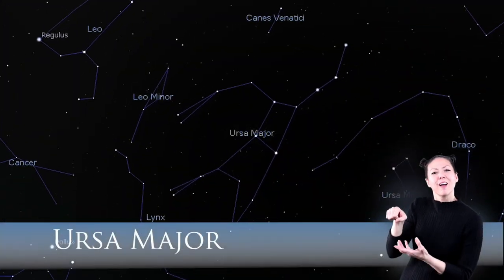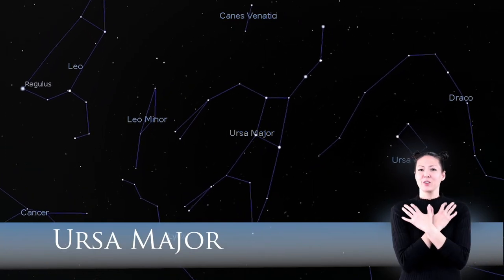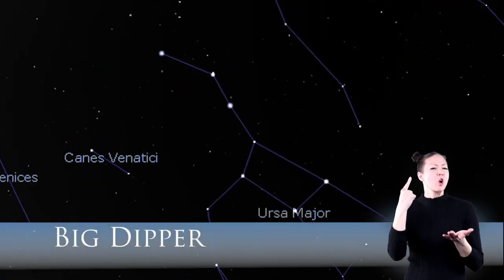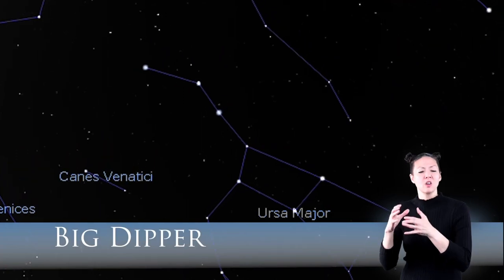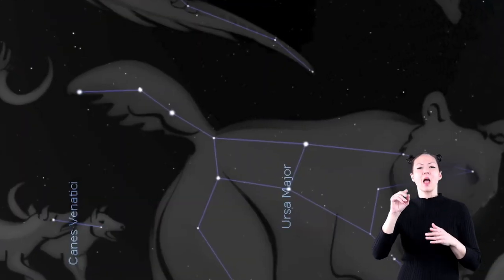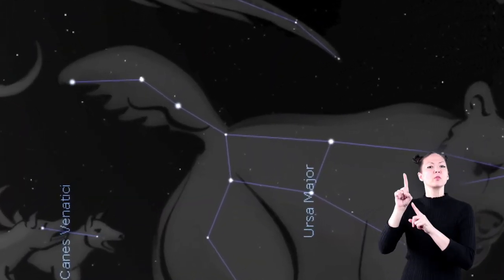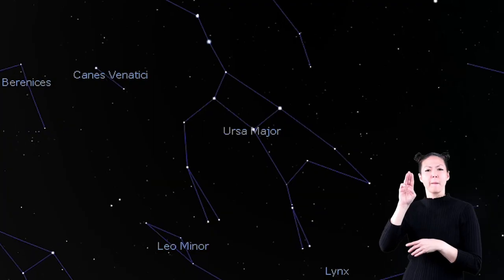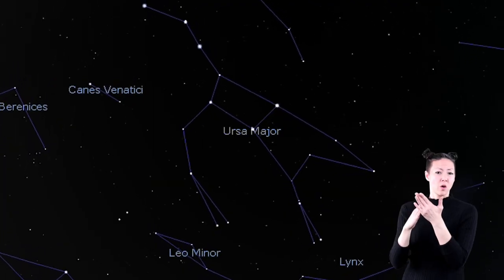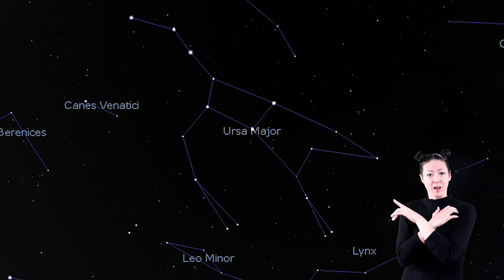Ursa Major means great bear. You have probably heard of a smaller section of it, called the Big Dipper. The Big Dipper is a group of stars inside Ursa Major. It makes up part of the back half of the bear, as well as its tail.